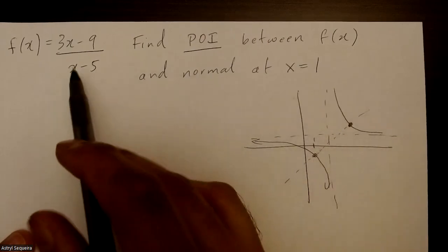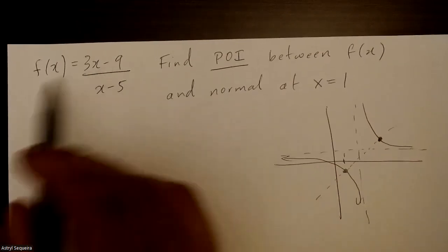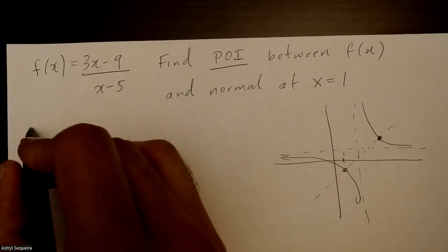Pretty simple, we can just sub in the function. We're not looking for this point of intersection, we're looking for the other one, which is the one right over here. So in order to do this, you want to first derive this function. We've got to derive it with quotient rule.